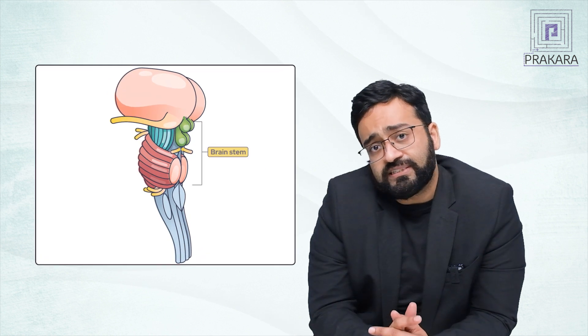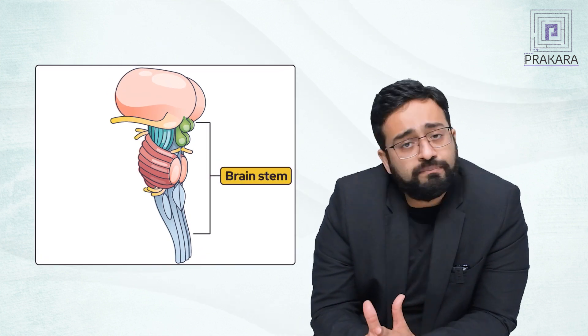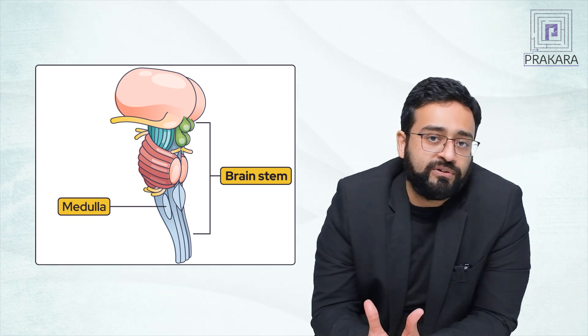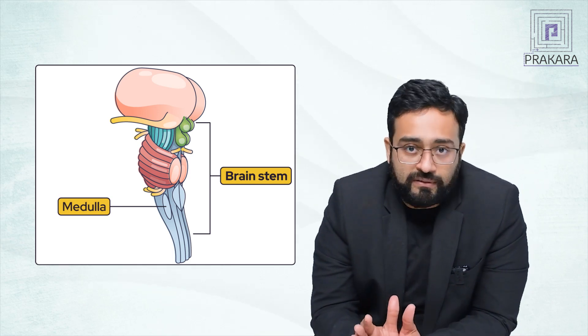The spinal cord starts off as the brainstem or the terminal part of the brainstem that is the medulla oblongata. This medulla oblongata continues within the vertebral column as the spinal cord.